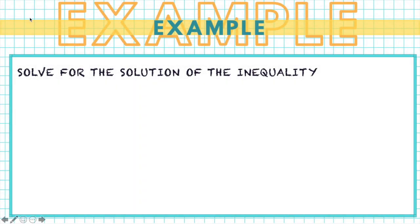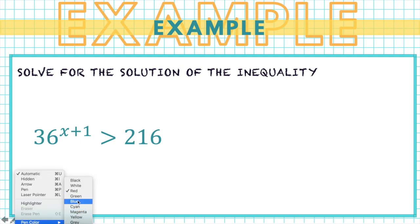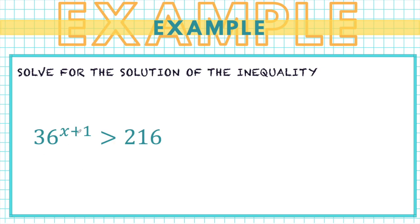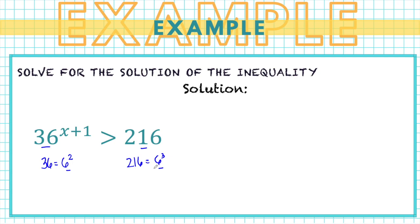Let's solve the inequality 36 raised to x plus 1 greater than 216. We change both expressions to have the same base: 36 is 6 raised to 2 and 216 is 6 raised to 3. So we get 6 raised to 2 times (x plus 1) greater than 6 raised to 3. Since we have the same base, we drop the base and use the exponents: 2 times (x plus 1) greater than 3.